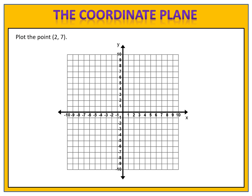Sometimes we actually want to plot a point ourselves. Look at this exercise: plot the point 2 comma 7. In this case, we know that x is 2 and y is 7. We begin by going on the x-axis to 2, and then on the y-axis going to 7. We find the line where those two intersect, and that's where we plot our point, at 2 comma 7.